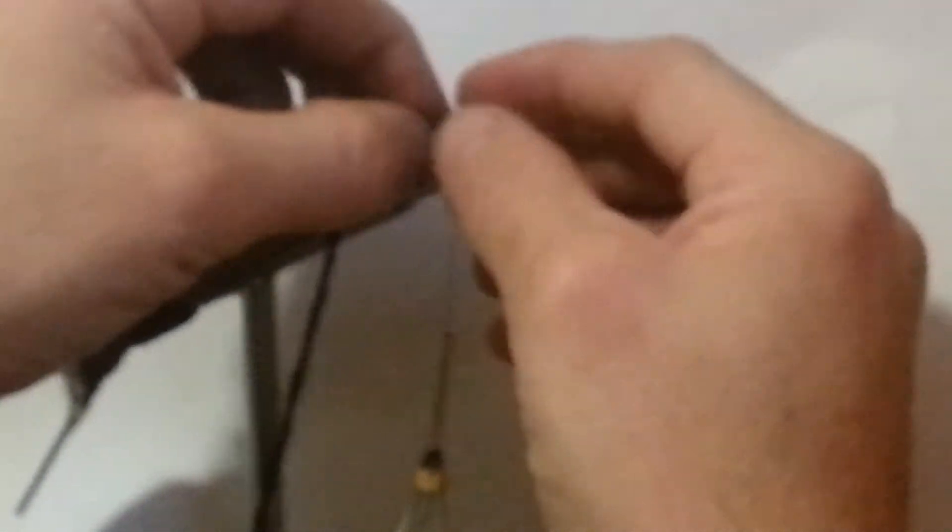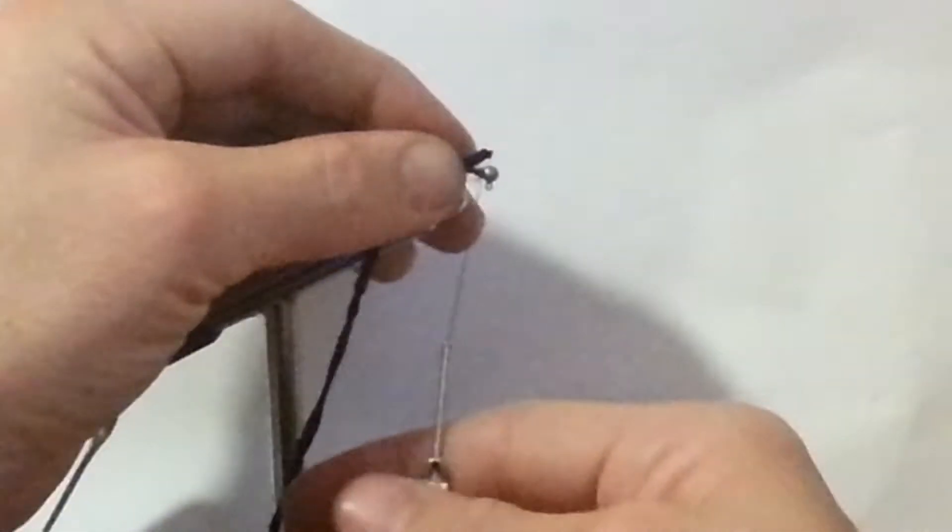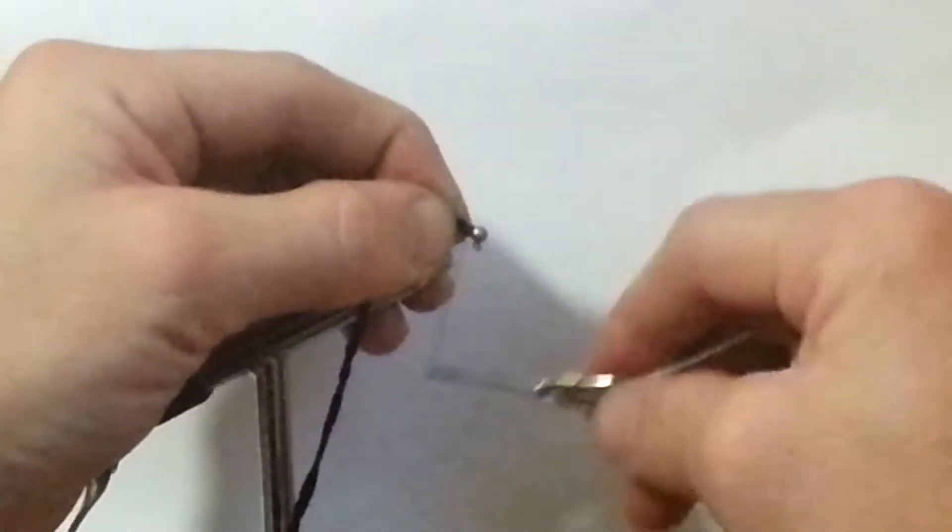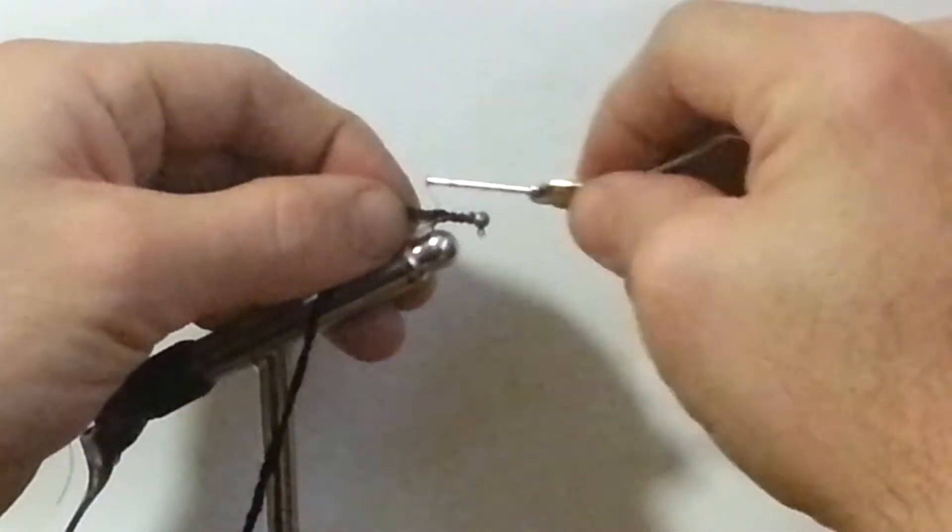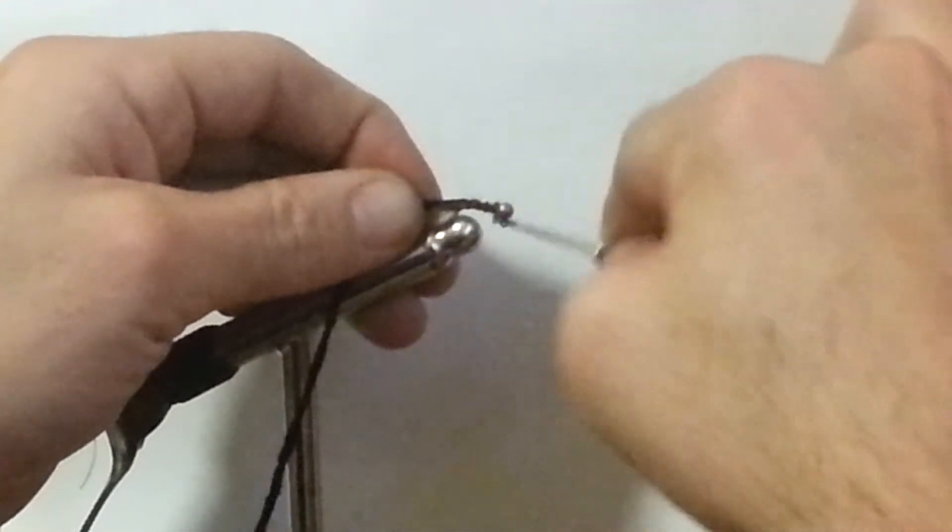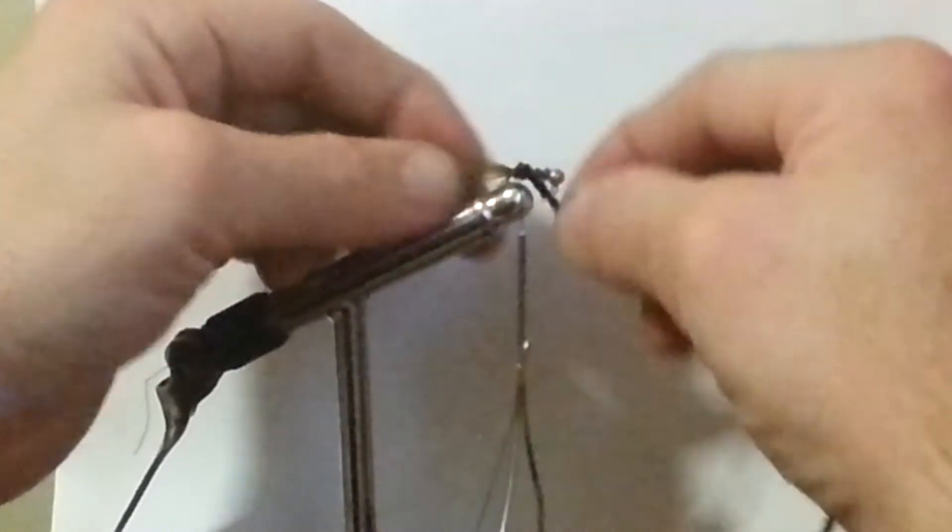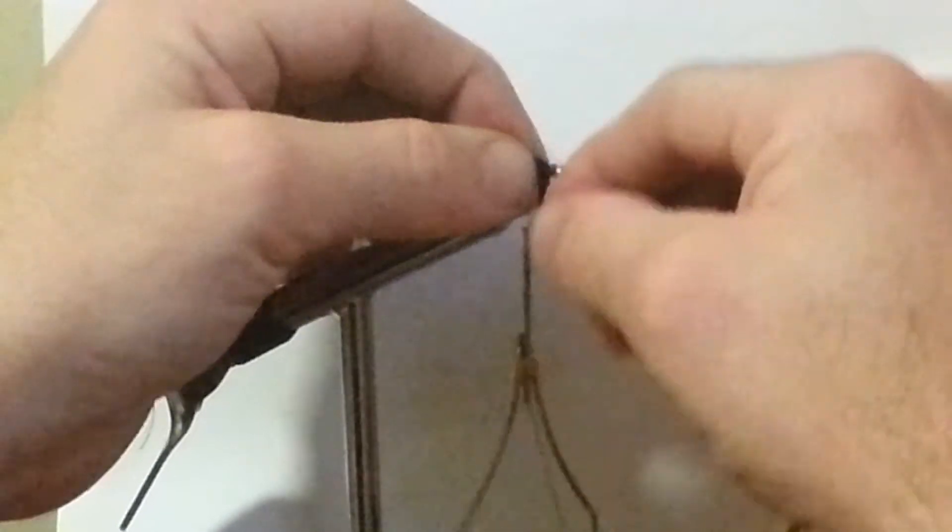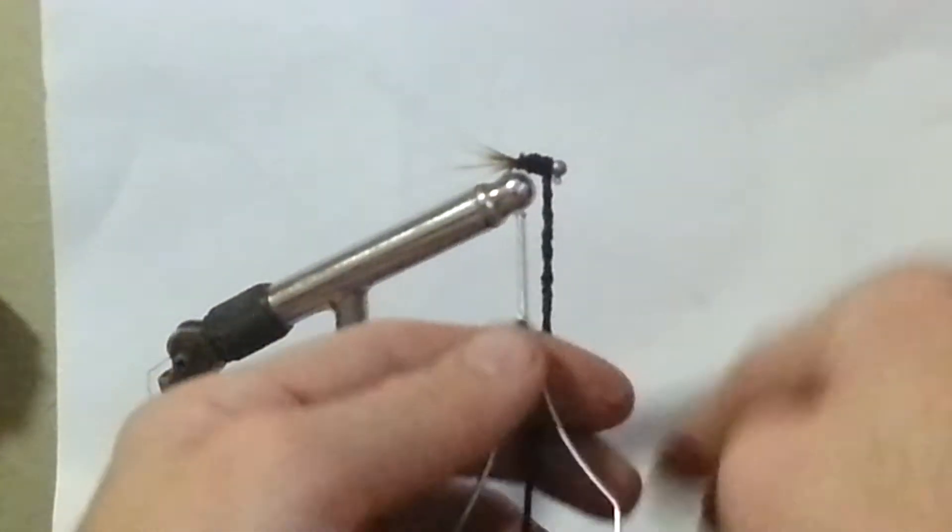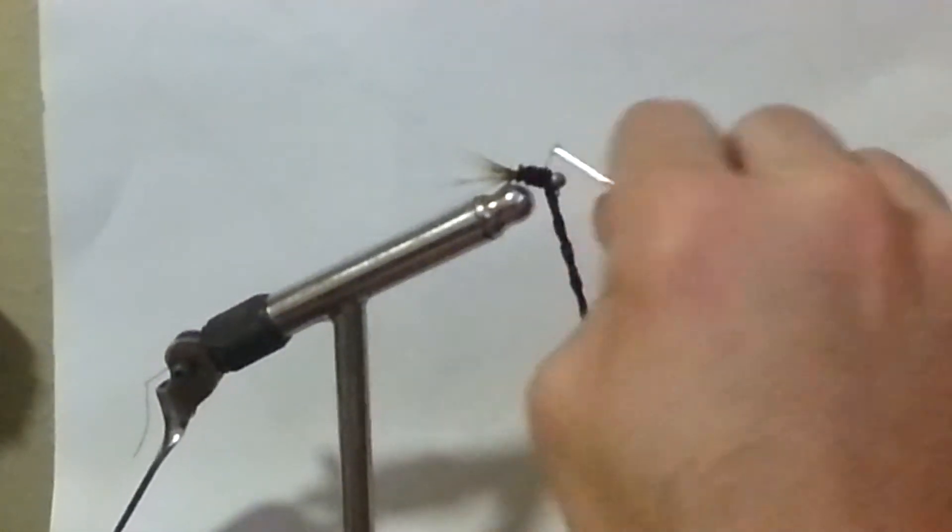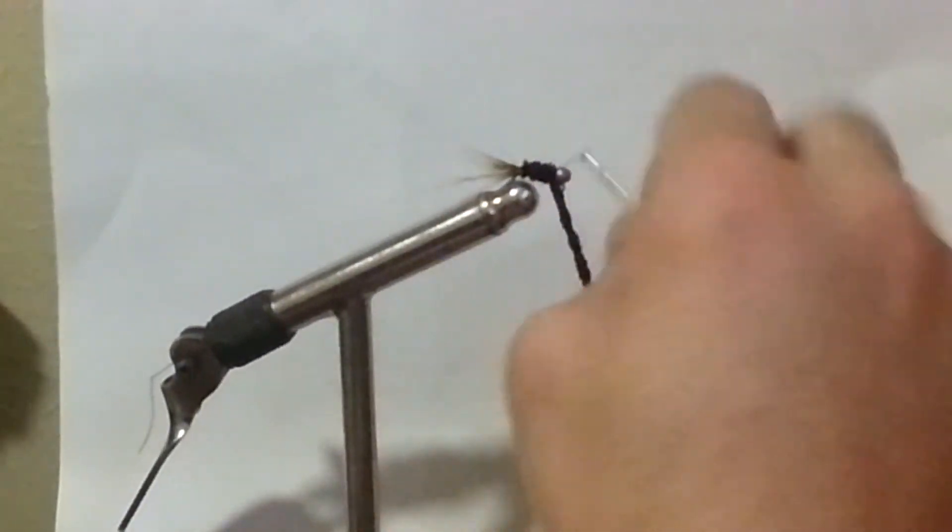Take a little bit of chenille yarn, same thing as the marabou. Start at the top and wrap it all the way down. Once you get down to the bottom, make a few wraps around the shank followed by a few wraps with the thread.